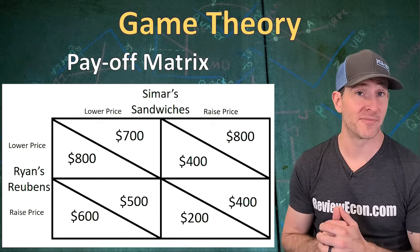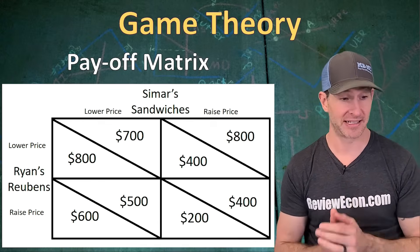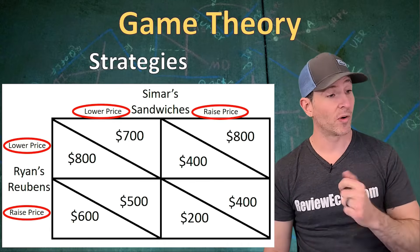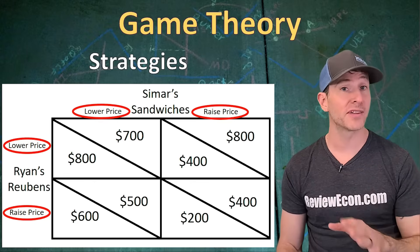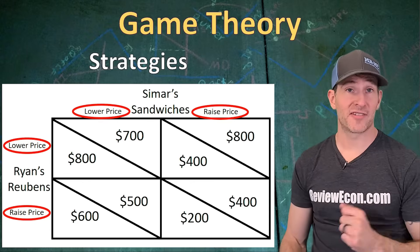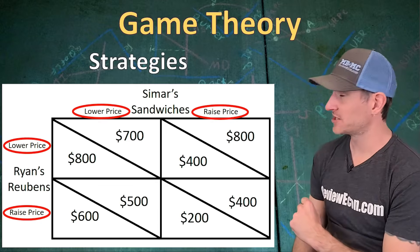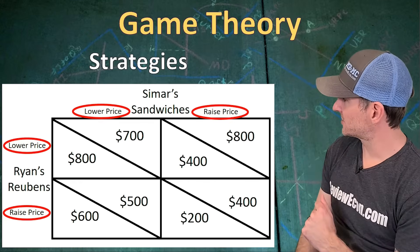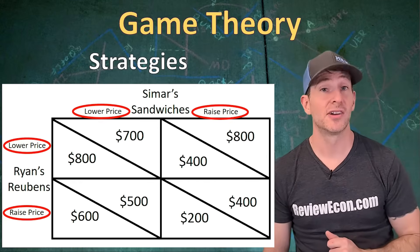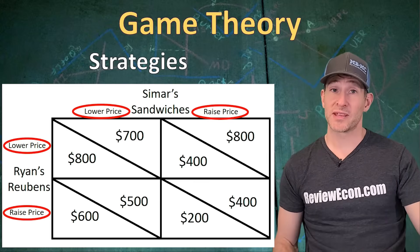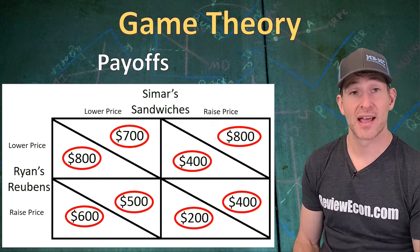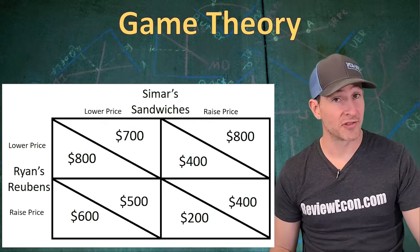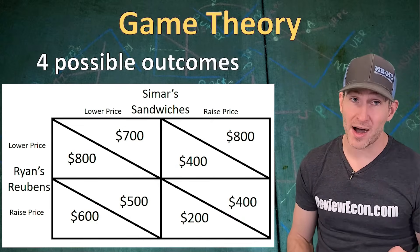We are going to go through how to read this payoff matrix and then talk about answering the questions you are likely to see. First, we have the strategies within this payoff matrix. Both of these firms can choose to either lower their price or raise their price. You can see all different possible strategies within a payoff matrix — strategies on the top belong to Simmer's Sandwiches and those on the left belong to Ryan's Rubens. The numbers within the matrix are the payoffs — the amounts of economic profit the firms could earn depending on the outcomes. There are four quadrants giving us four possible outcomes.